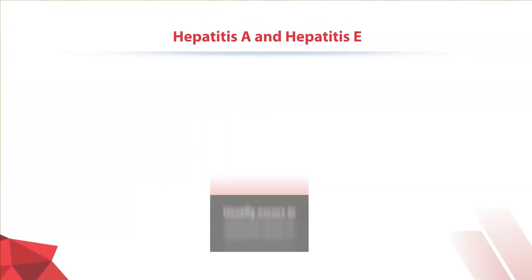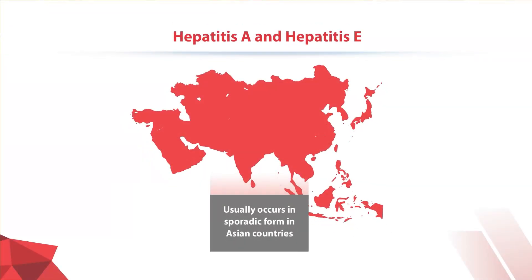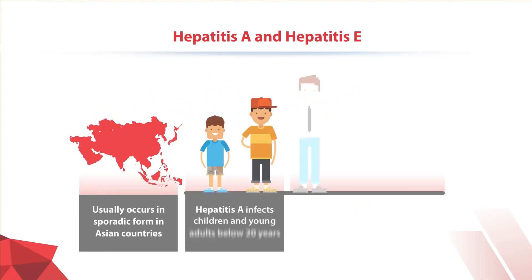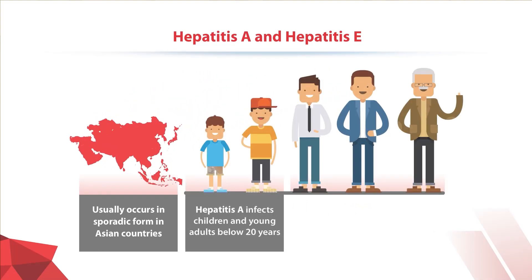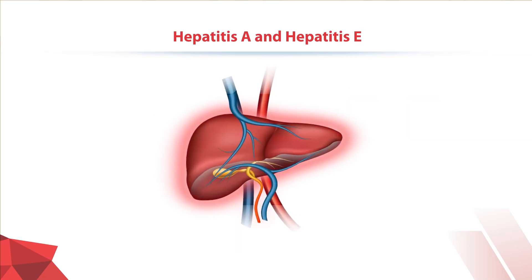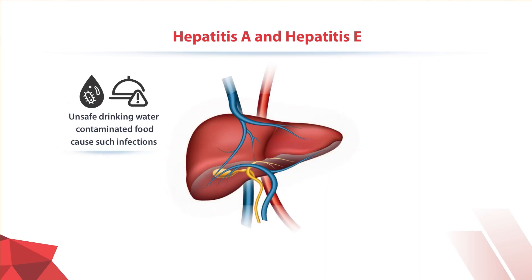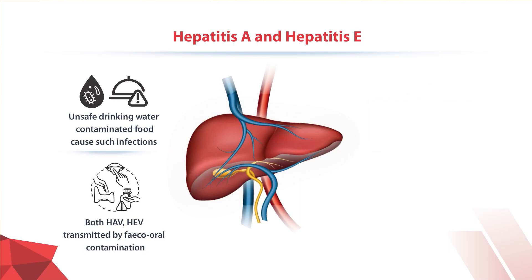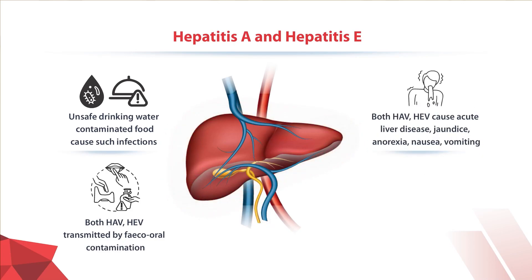The other Hepatitis A and E viruses occur in a sporadic form in Asian countries. Hepatitis A usually infects children and young adults of less than 20 years of age, whereas Hepatitis E usually infects people who are above the age of 20 years. Both A and E viruses are transmitted by feco-oral contamination, so if you drink unsafe water or eat contaminated food you can get Hepatitis A and E infections.